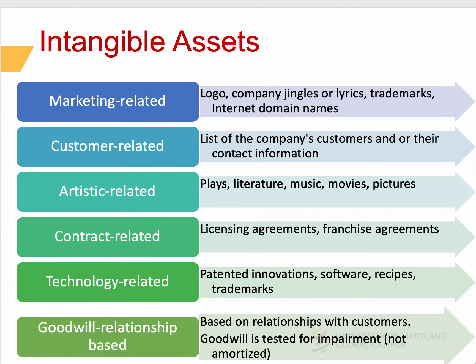We will also learn how to account for intangible assets, including goodwill. There are various categories for intangible assets, as you can see on the slide. Some are market-related, such as logos and trademarks. Others are artistic-related, such as movies and pictures. Contract-related, such as franchise agreements. Technology-based, such as patented innovations, software, and trademarks. And some are goodwill, or relationship-based.